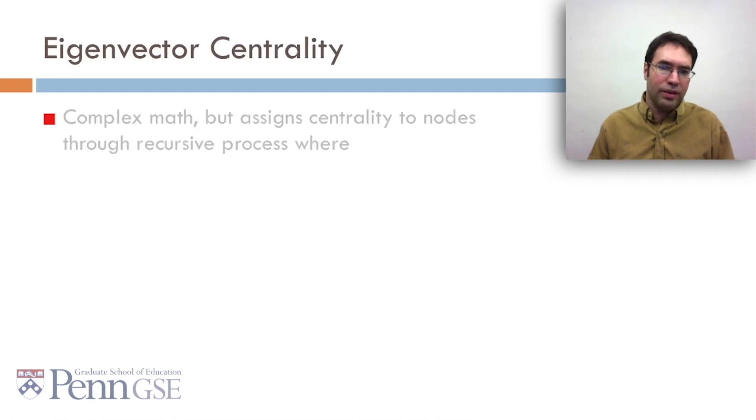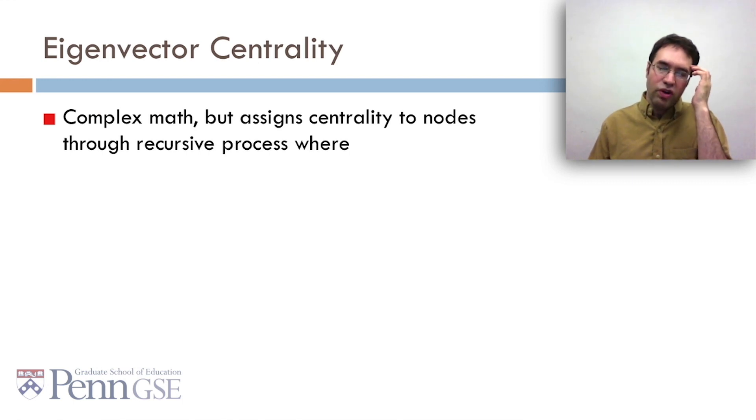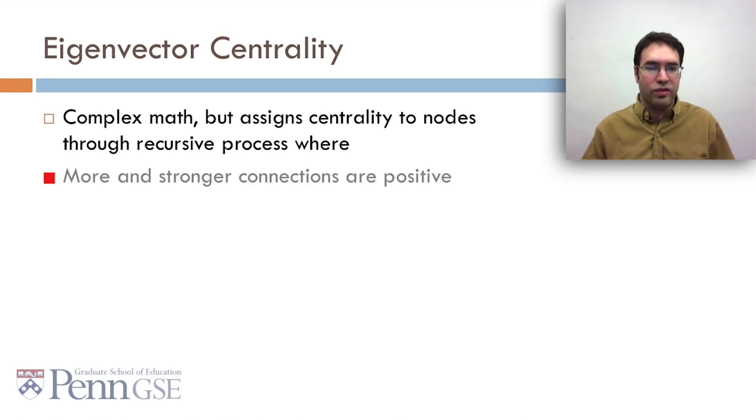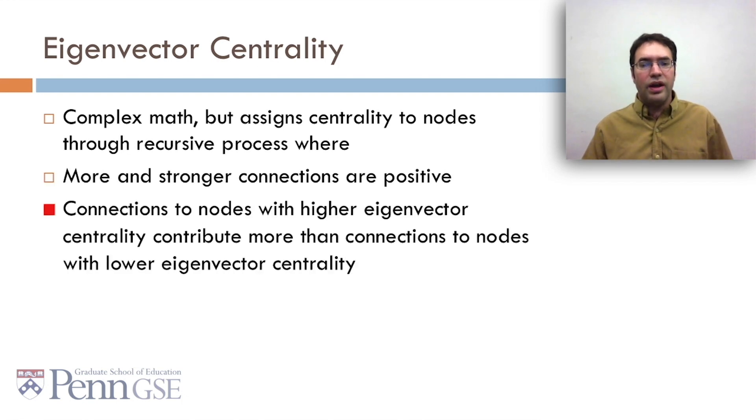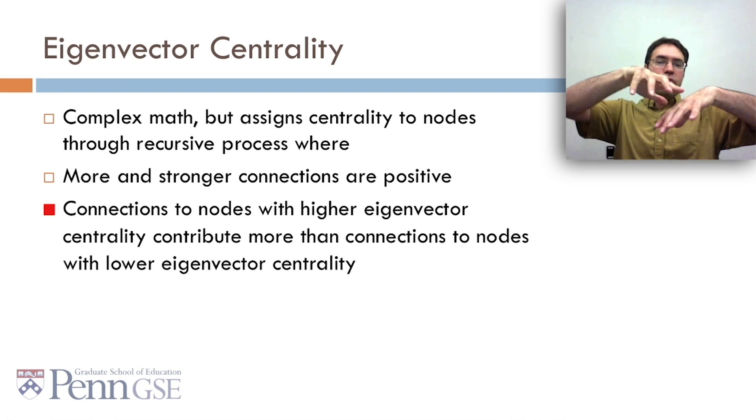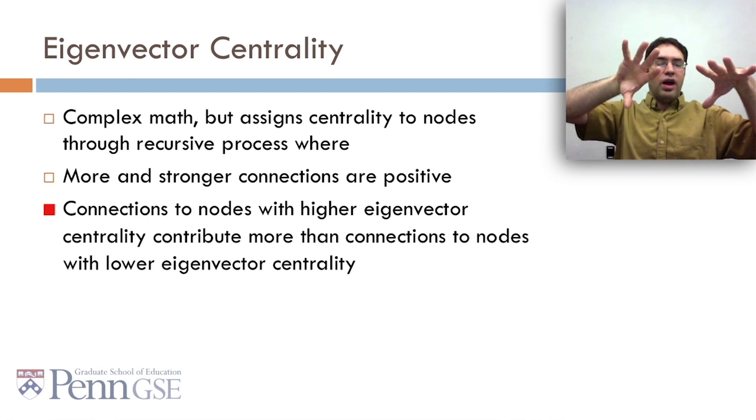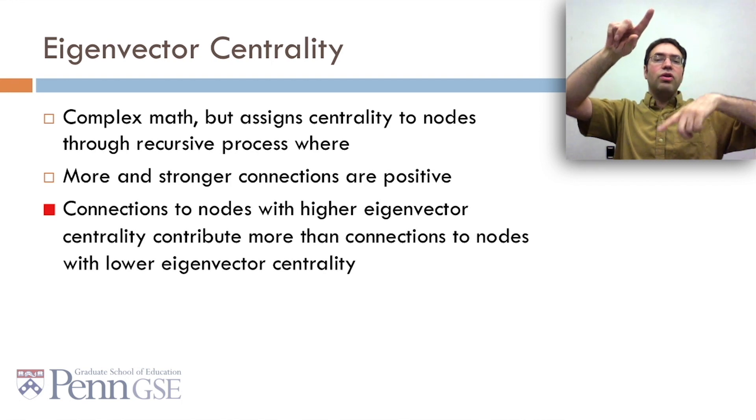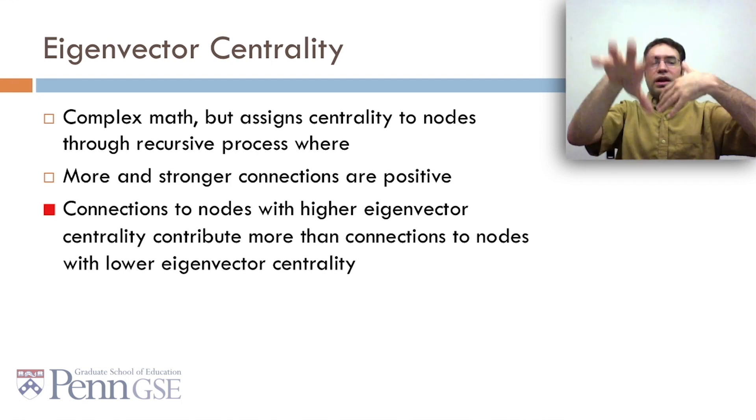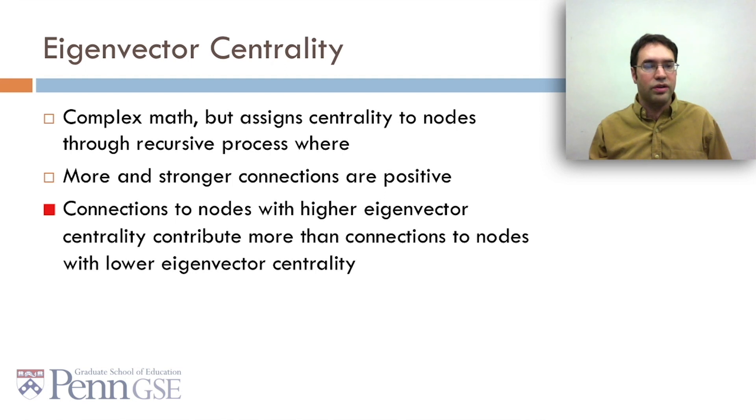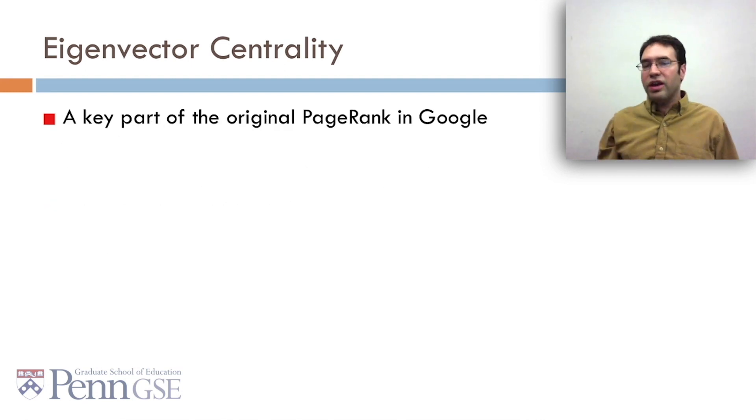And finally, there's eigenvector centrality, which has complex math, which assigns centrality to nodes through a recursive process where more and stronger connections are positive. And connections to nodes with higher eigenvector centrality contribute more than connections to nodes with lower eigenvector centrality. So you assign each data point centrality based on its connections, and then you look at who each point connects to, and you keep repeating and iterating on this until you converge. This is actually a key part of the original PageRank in Google. So it's actually a pretty cool algorithm that has some real major real-world impacts.